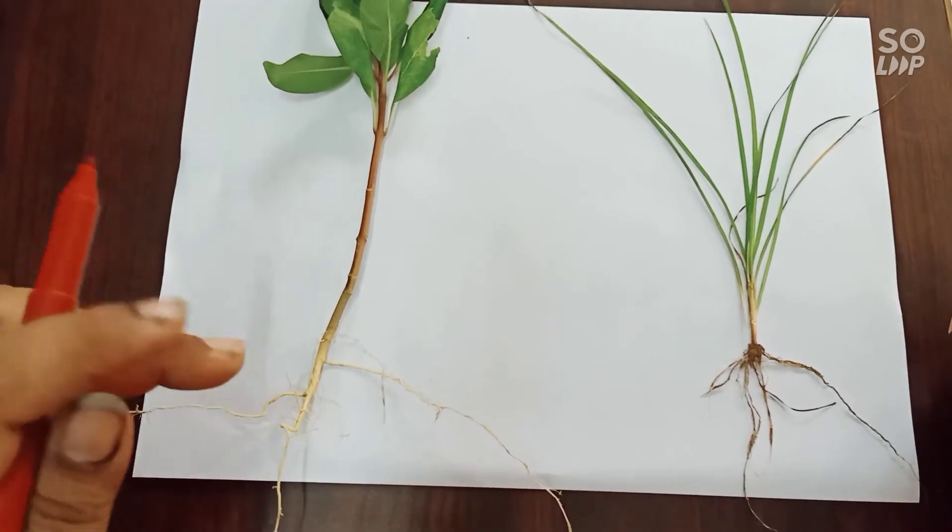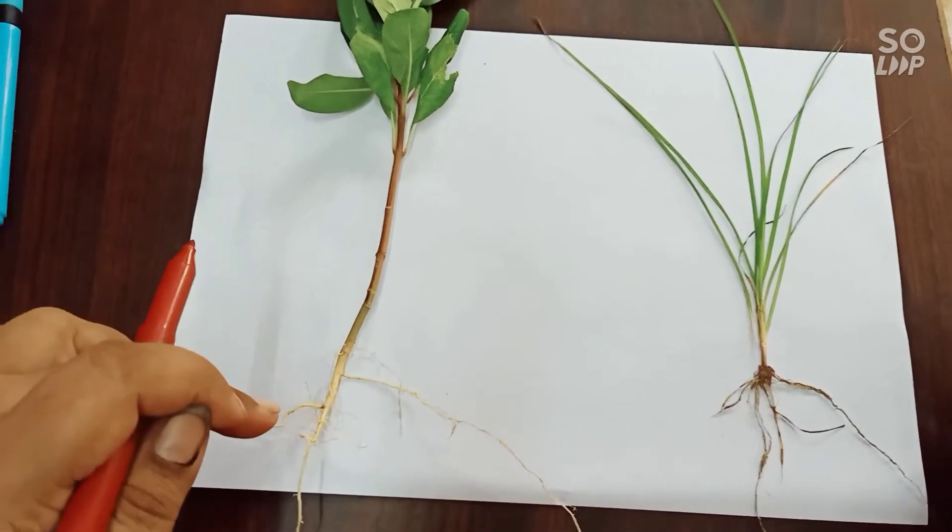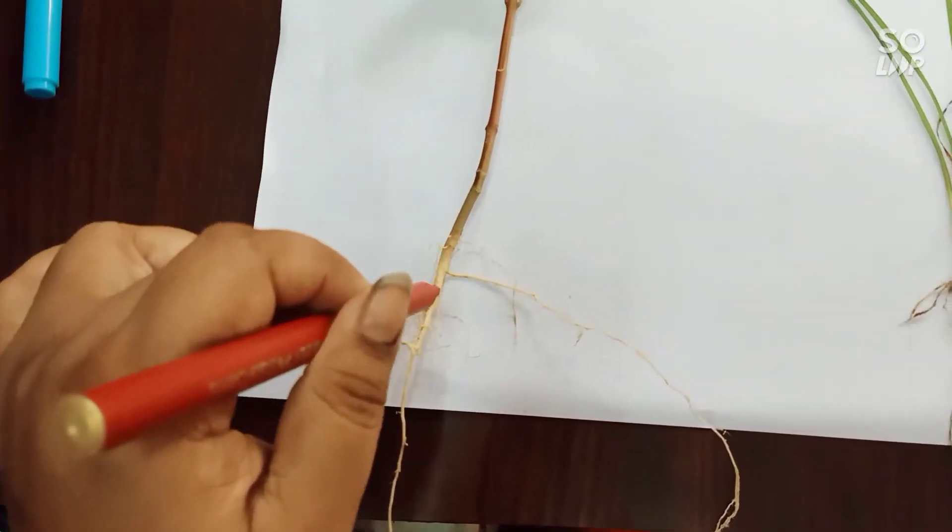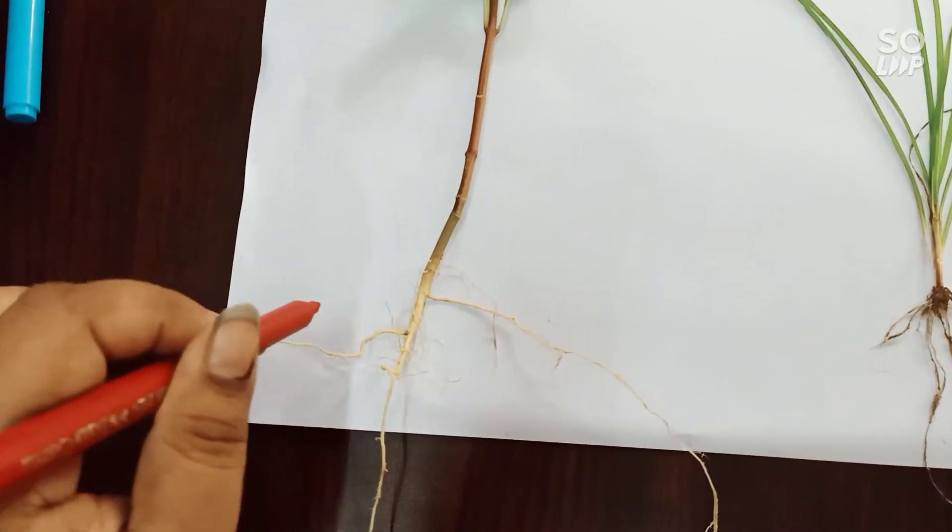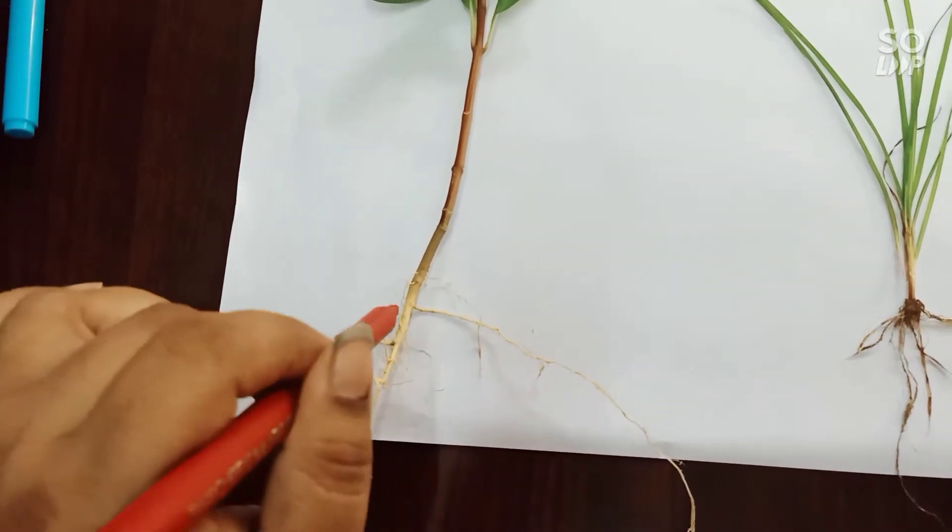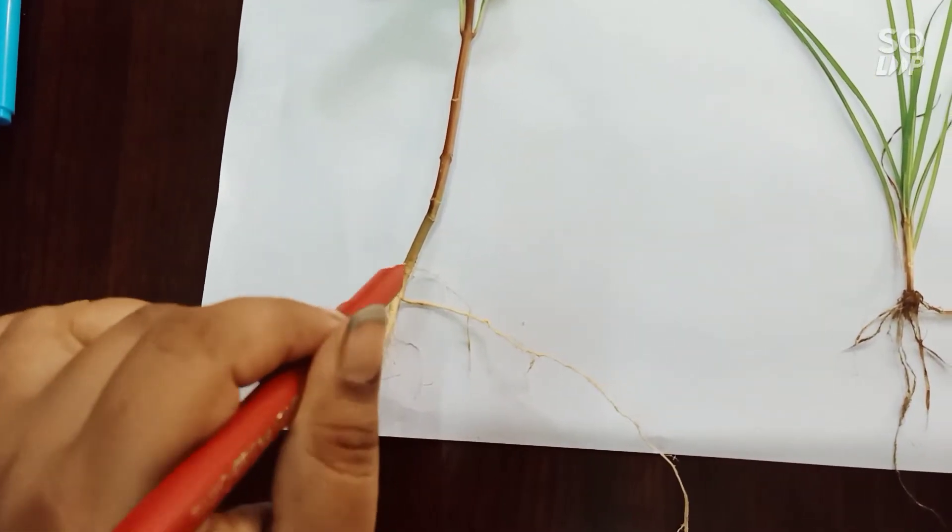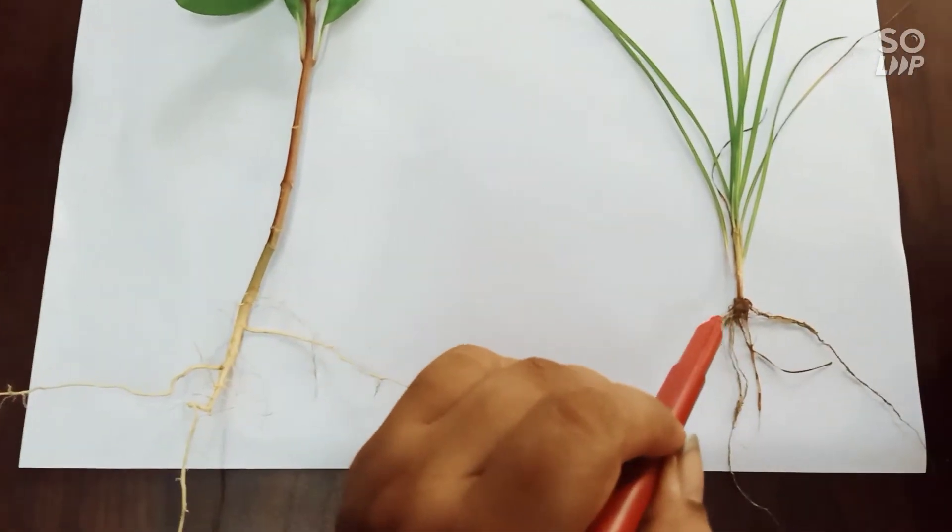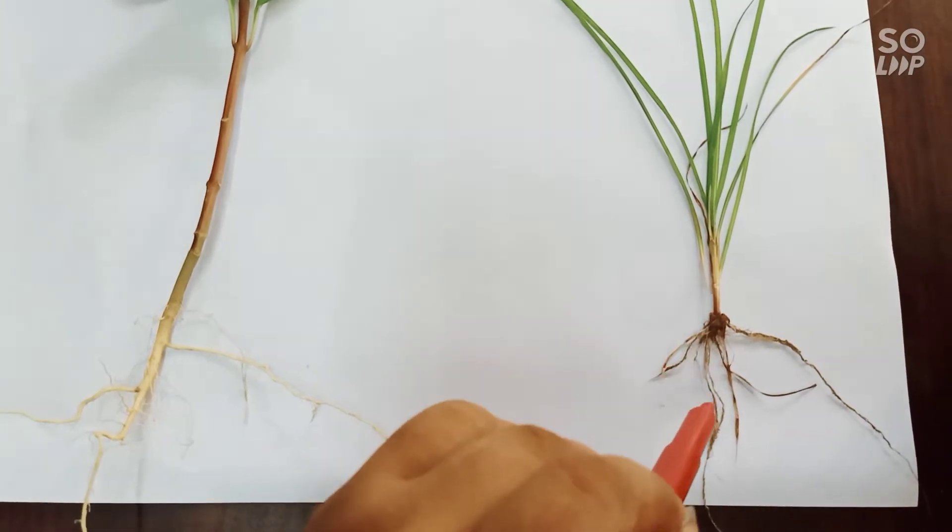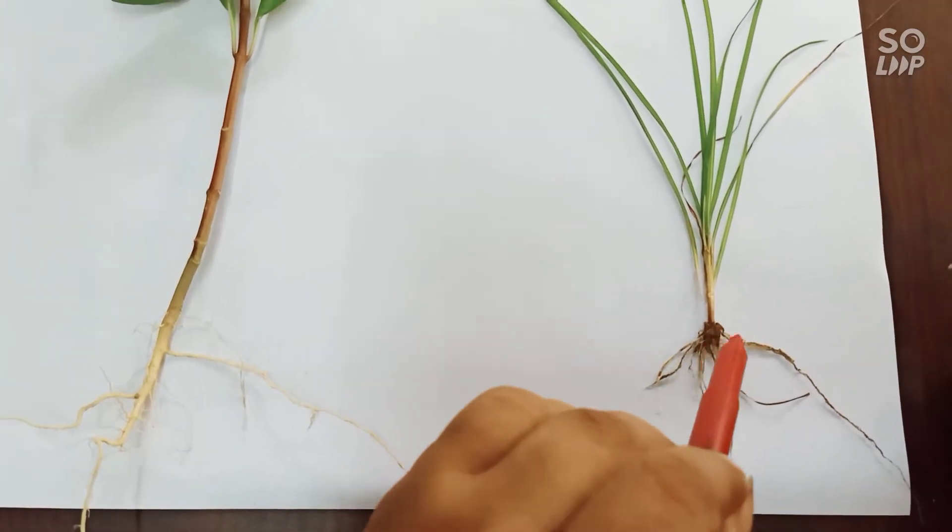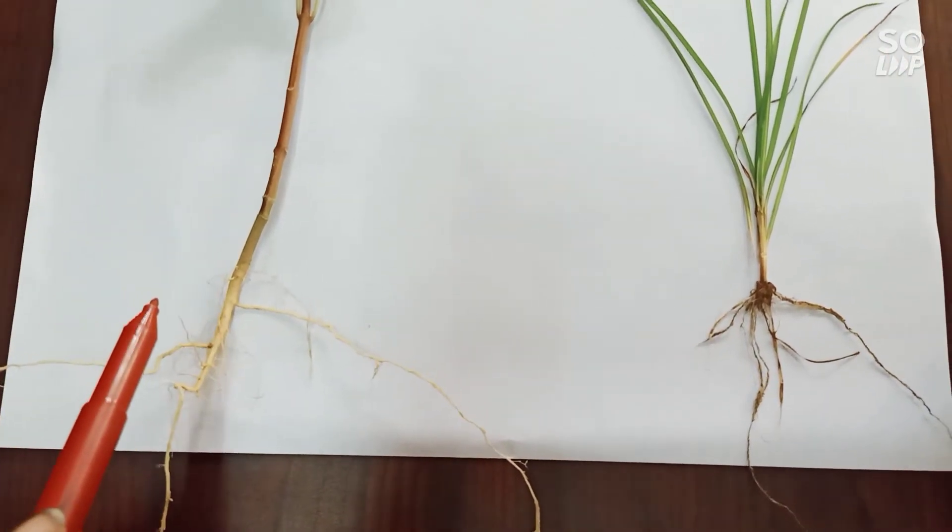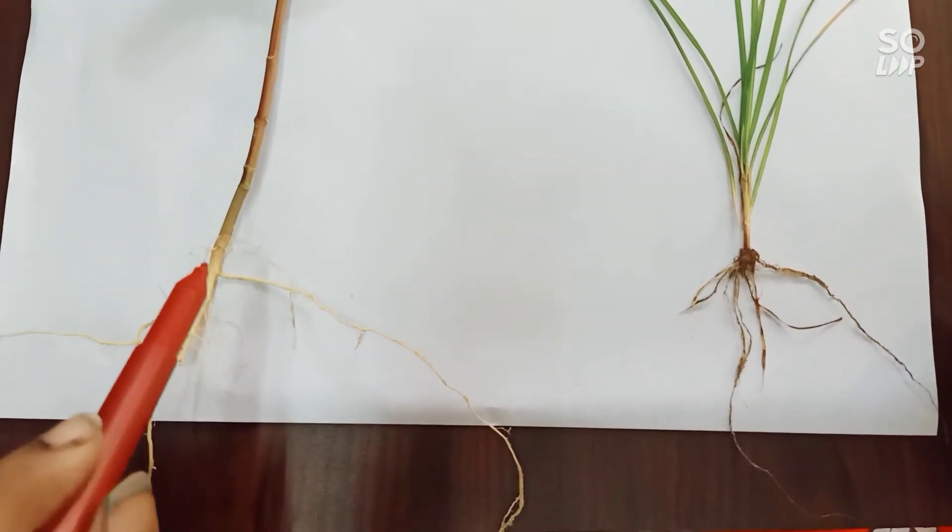Now if you carefully observe the roots, you can see that these roots are actually having a tapering end and there are some small fine lines going through it. This one you can see that from the point where the stem stops, there are actually numerous roots. See this structure and this structure is totally different.